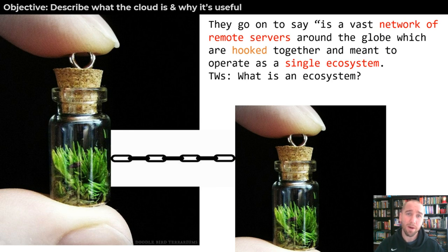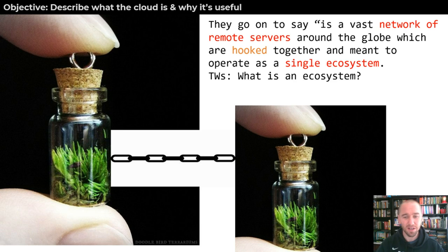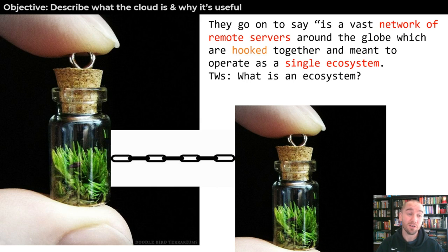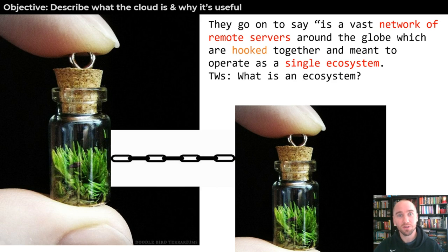That really helps wrap your mind around the difference between a cloud and just a network. You put two ecosystems together and you have a single ecosystem — and that's the same thing with networking. You put networks together to create bigger networks. That's where the name internet came from: an inter-network of networks of computers and servers.